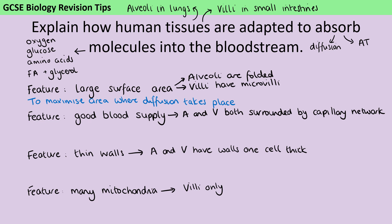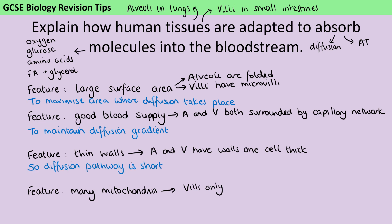Having a large surface area is going to maximize the area where diffusion can take place. This is where we start to get into level three, because we're making a link between not just what the adaptation is and where it is, but also why it is important and how it helps us to absorb the maximum number of molecules. For the good blood supply, that's about maintaining the concentration gradient — diffusion happens where particles move from a high concentration to a low concentration, so by taking away the oxygen or sugar as soon as it's absorbed, we're maintaining that gradient. The thin walls give us a really short diffusion pathway. And the many mitochondria are for carrying out active transport and providing the energy for that.